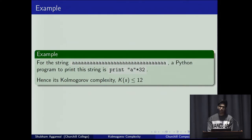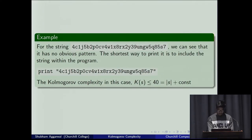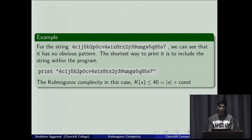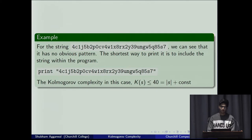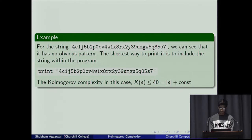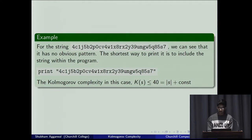For a random string with no observable pattern, there's no good way to compress the information and generate a short program that prints it. The approach is to just embed the string inside the program, giving a total program length of 40 here. You can do this with any string, which gives an upper bound on Kolmogorov complexity of the length of the string plus some constant value depending on the language used.